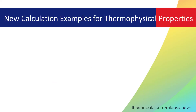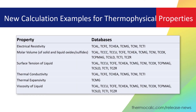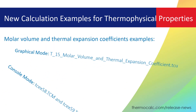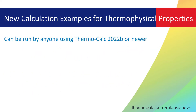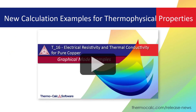Over the past several years, many new thermophysical properties have been added to Thermo-Calc databases, such as molar volume, electrical resistivity, and thermal conductivity. The 2022b release includes several examples in both graphical and console mode demonstrating how easy it is to calculate these thermophysical properties using Thermo-Calc. The examples can be run by anyone with a license for Thermo-Calc 2022b or newer, including those using the free educational package. A new video is available demonstrating graphical mode example T16, electrical resistivity and thermal conductivity of pure copper.